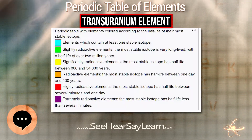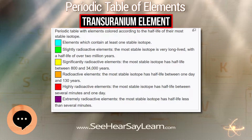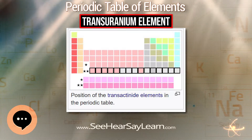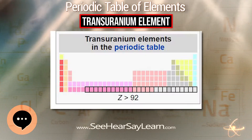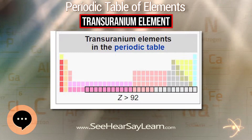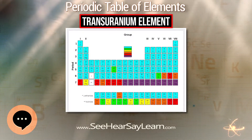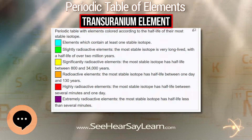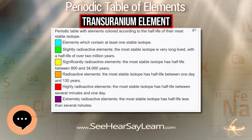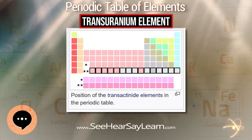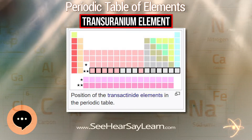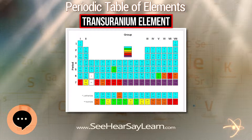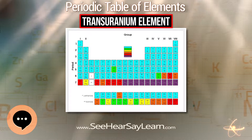All of the elements with higher atomic numbers have been first discovered in the laboratory, with neptunium and plutonium later also discovered in nature. They are all radioactive with half-lives much shorter than the age of the earth, so any primordial atoms of these elements, if they ever were present at the earth's formation, have long since decayed. Trace amounts of neptunium and plutonium form in some uranium-rich rock, and small amounts are produced during atmospheric tests of nuclear weapons, generated from neutron capture in uranium ore with subsequent beta decays.